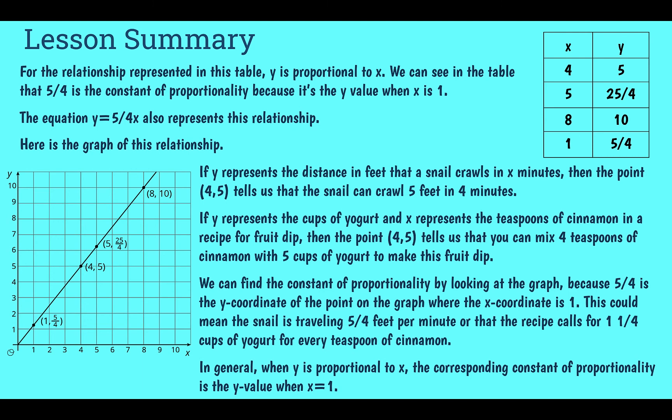So in the table, we can see that 5 fourths is paired with 1. 5 fourths must be the constant of proportionality. In our equation, we have y equals 5 fourths x. Again, our number is 5 fourths. That's our constant of proportionality.